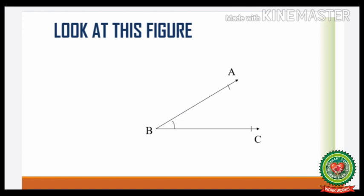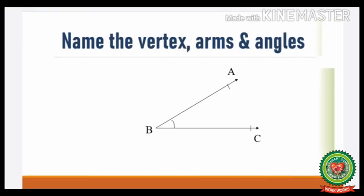Look at this figure. What can you see? It is an angle with the names given as A, B, C. Now we have to find out its vertex, arms, and names of the angles.